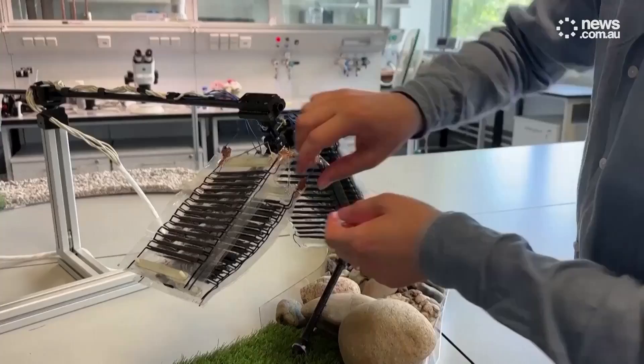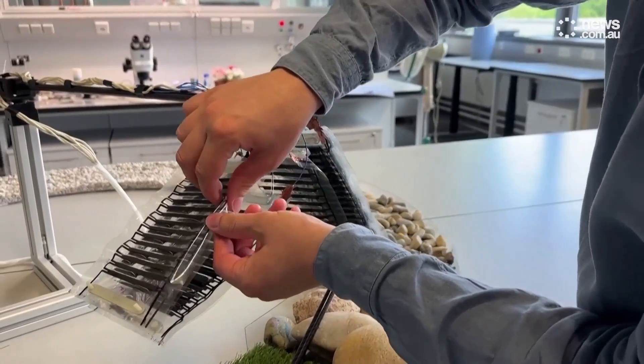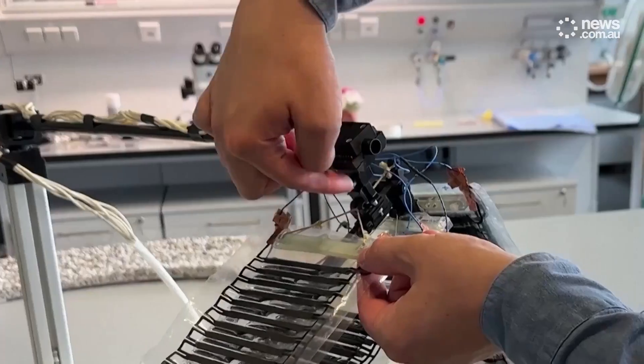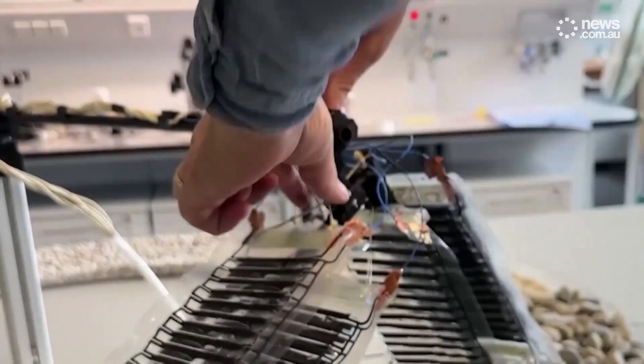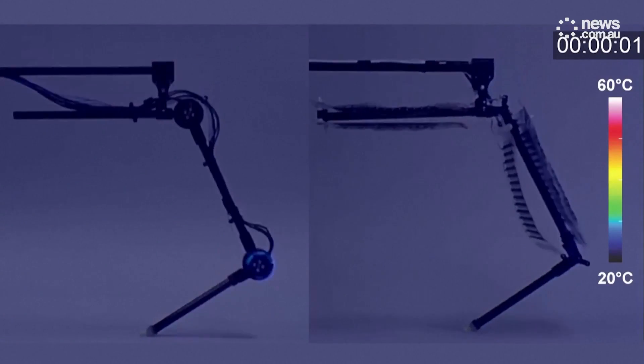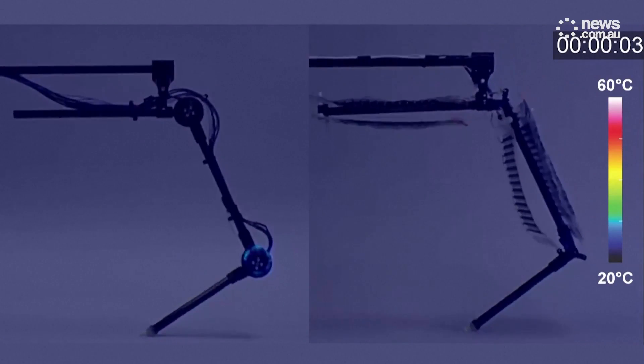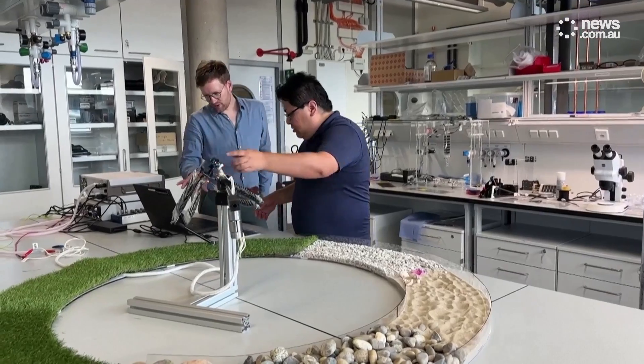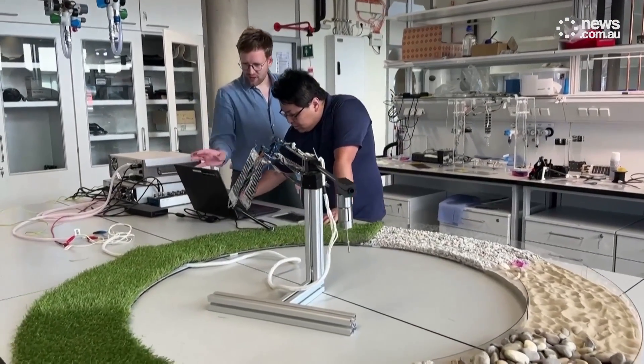So how does it work? The artificial muscles are oil-filled plastic bags with conductive black electrodes on the sides. When an electric charge is applied, the electrodes attract each other due to static electricity, pushing the oil to one side and shortening the bag.